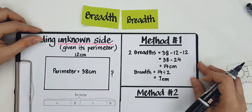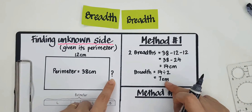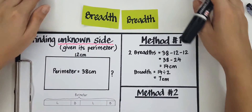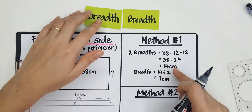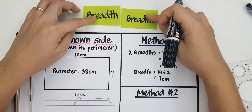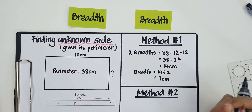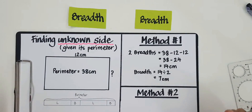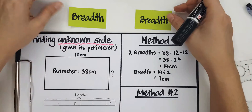So this is method one. To find the unknown breadth, what I did was to take away the two lengths and then split the two breadths by two to get one breadth, which is 7 centimeters.